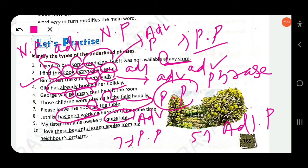'I love these beautiful green apples from my neighbor's orchard' — the head word is 'apples'. The words 'these beautiful green' are pre-modifiers (demonstrative + adjectives), and 'from my neighbor's orchard' is a post-modifier (prepositional phrase). So 'these beautiful green apples from my neighbor's orchard' is a noun phrase.